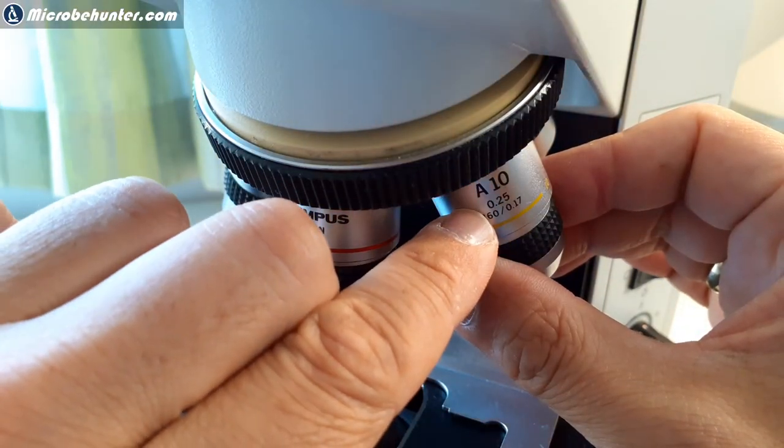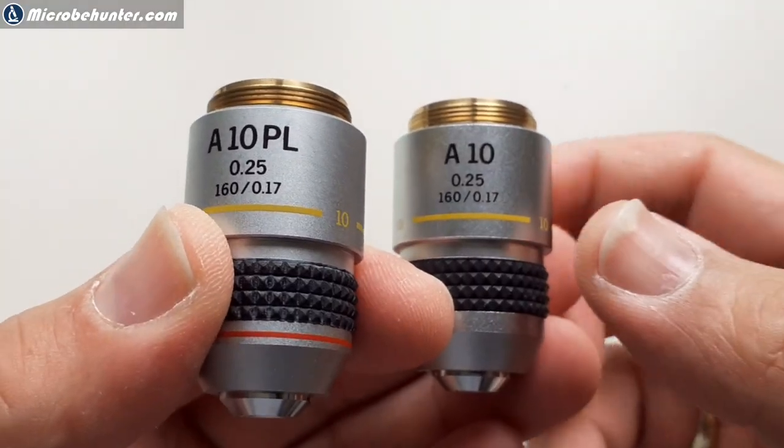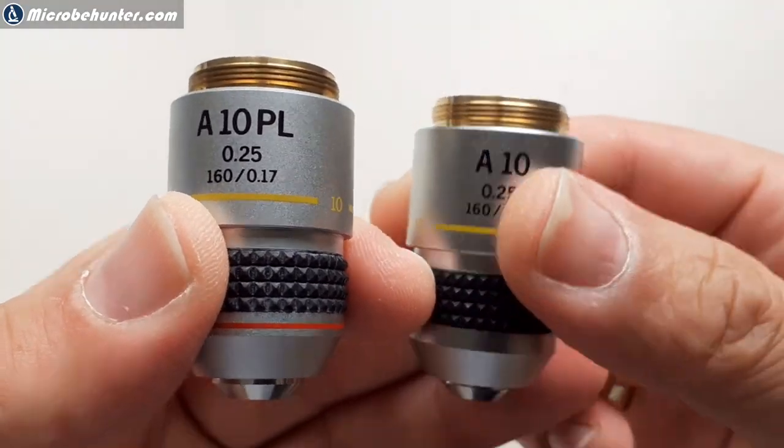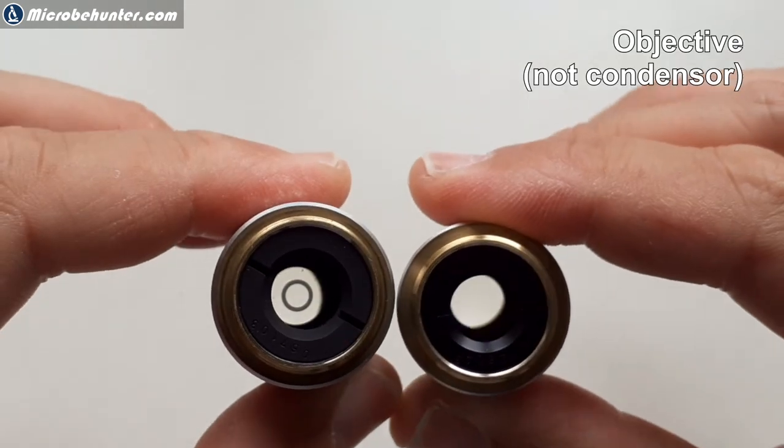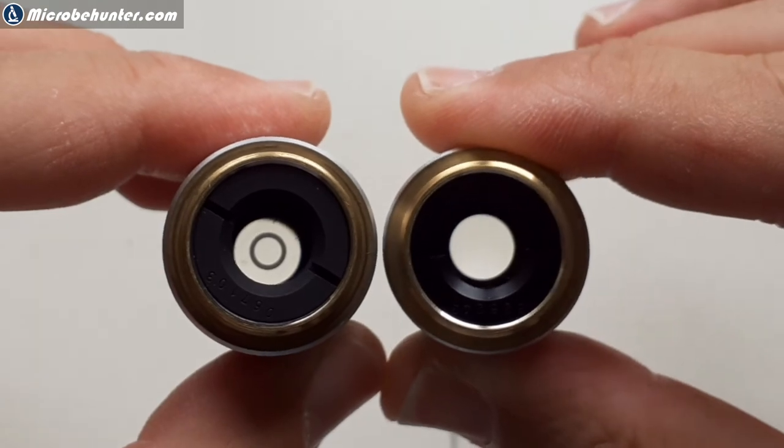This one is my regular bright field objective, achromatic 10 times. I'm now removing it. Next to it on the left side is the phase contrast condenser, and you can see now the phase ring. This phase ring is absolutely essential for phase contrast.